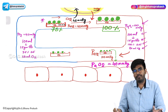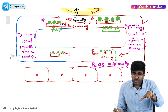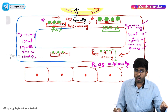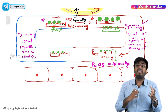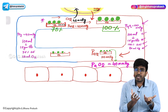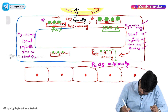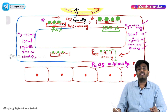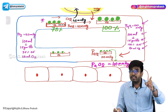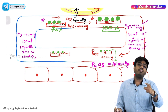This arterial blood is now coming to the tissues. At the level of tissues, the tissues are continuously using oxygen, so the partial pressure of oxygen at the tissues is less, but the partial pressure of carbon dioxide is more because tissues continuously take up oxygen and produce carbon dioxide through metabolism. The partial pressure of oxygen at the level of tissues is only 40 mmHg.